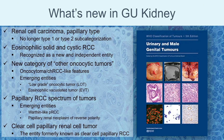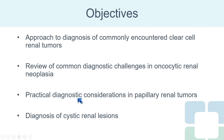A major change in the WHO is the carcinoma versus tumor designation: what we used to call clear-cell papillary RCC is no longer recognized as a carcinoma entity. We are now encouraged to call it clear-cell papillary renal cell tumor, to reflect the fact that these tumors do not behave aggressively — they are essentially indolent. Today's objectives include approach to commonly encountered clear-cell renal tumors, common diagnostic challenges in oncocytic renal neoplasia, practical considerations for reporting papillary renal tumors, and common consultation cases in cystic renal neoplasia.